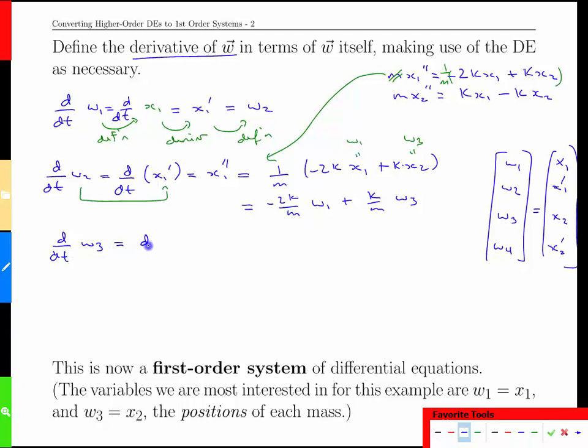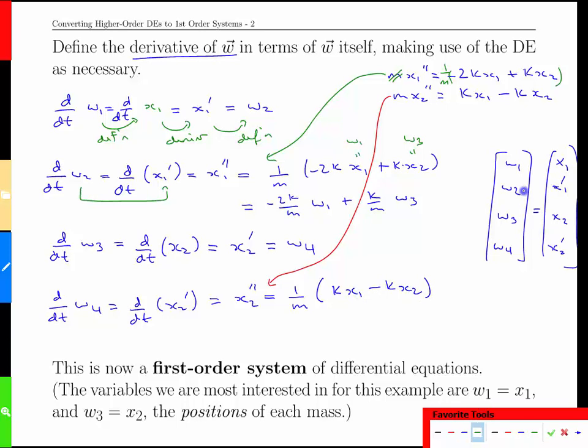The derivative of w₃—what would that equal? Well, w₃ is the same as x₂, so the derivative of x₂ is x₂'. x₂' is in our list here; x₂' is w₄. And last but not least, the derivative of w₄ is x₂ double prime, and we get this from the differential equation up here. It'll be 1/m times kx₁ minus kx₂. This is better known as w₁ in the new variable context, and this is w₃. So we have k/m·w₁ minus k/m·w₃.